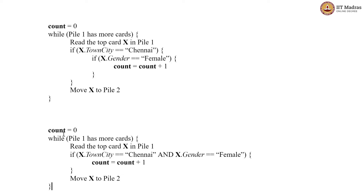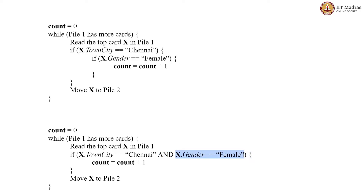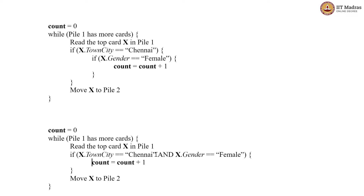Now consider this piece of code here. We are doing roughly the same thing, and at this point what are we doing? We are writing both the conditions in the same if statement. We are checking whether the city is Chennai and we are checking whether the gender is female. With an AND, it will make sure that every condition is satisfied and only then you go into this particular if block. So now we do not have a nested if block — a nested if block is when there is an if and an if within it. Here we are combining both those conditions using an AND statement and then again doing the same thing of incrementing the count. So these two pieces of code are exactly the same thing.